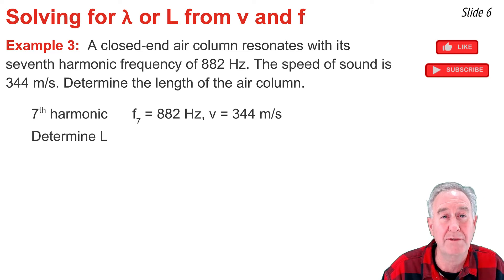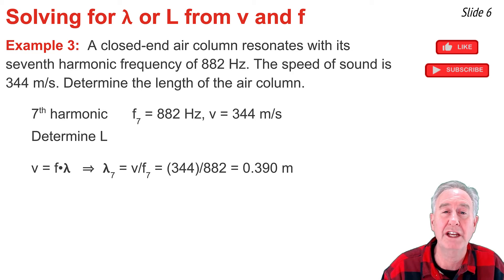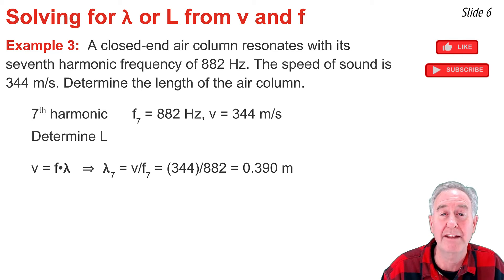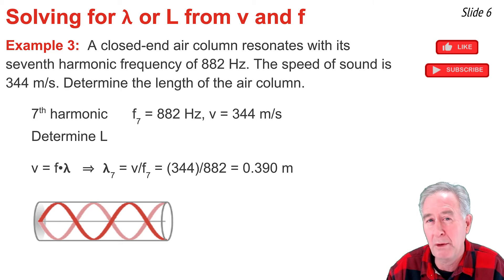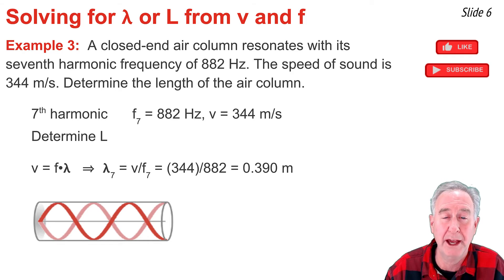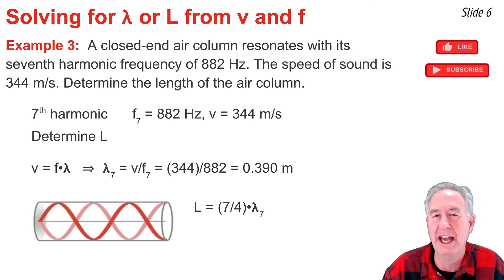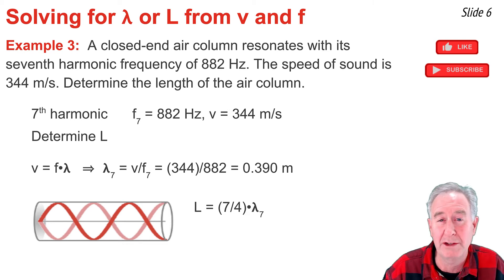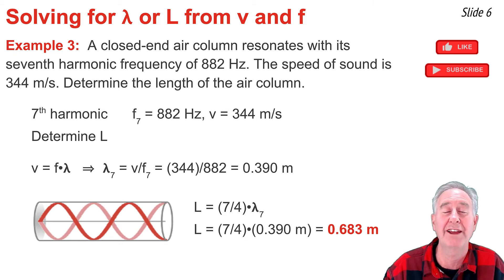Now that I have the wavelength, I use the standing wave pattern for the 7th harmonic, which contains 7/4 of a wave. So L = (7/4) × λ7. The numerator is always the harmonic number and the denominator is always 4. Taking the unrounded wavelength, multiplying by 7 and dividing by 4, I get L ≈ 0.683 meters.